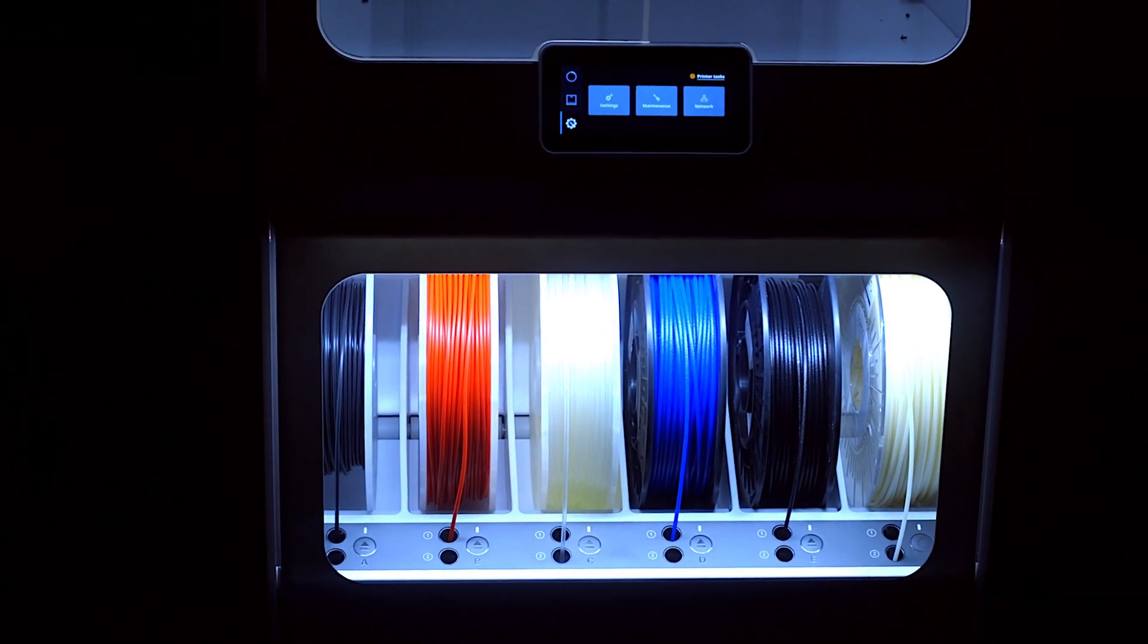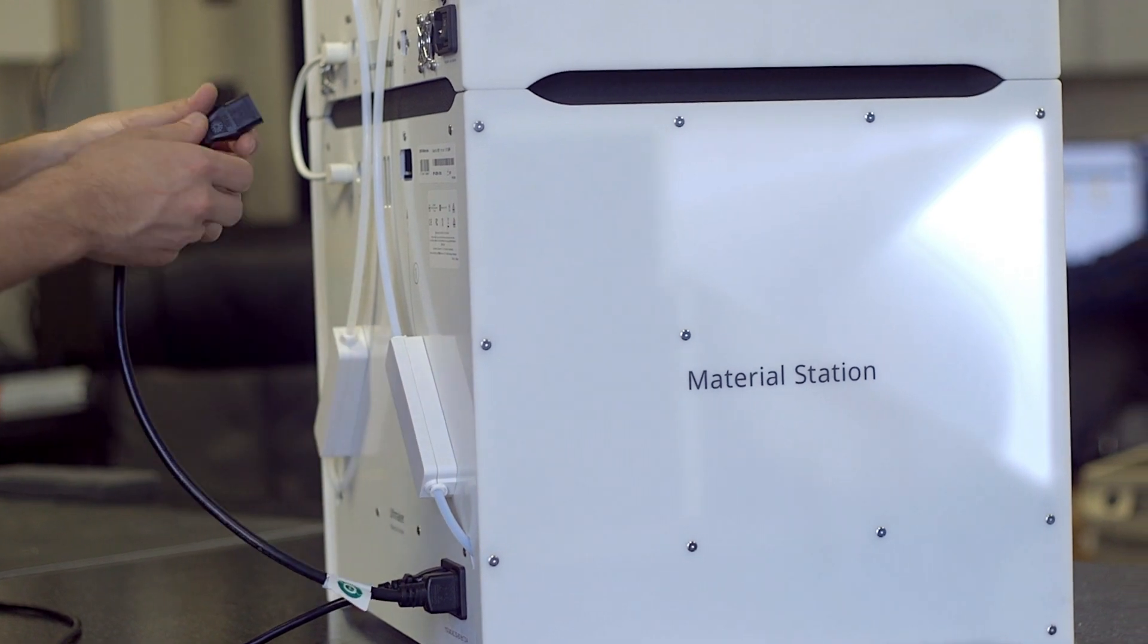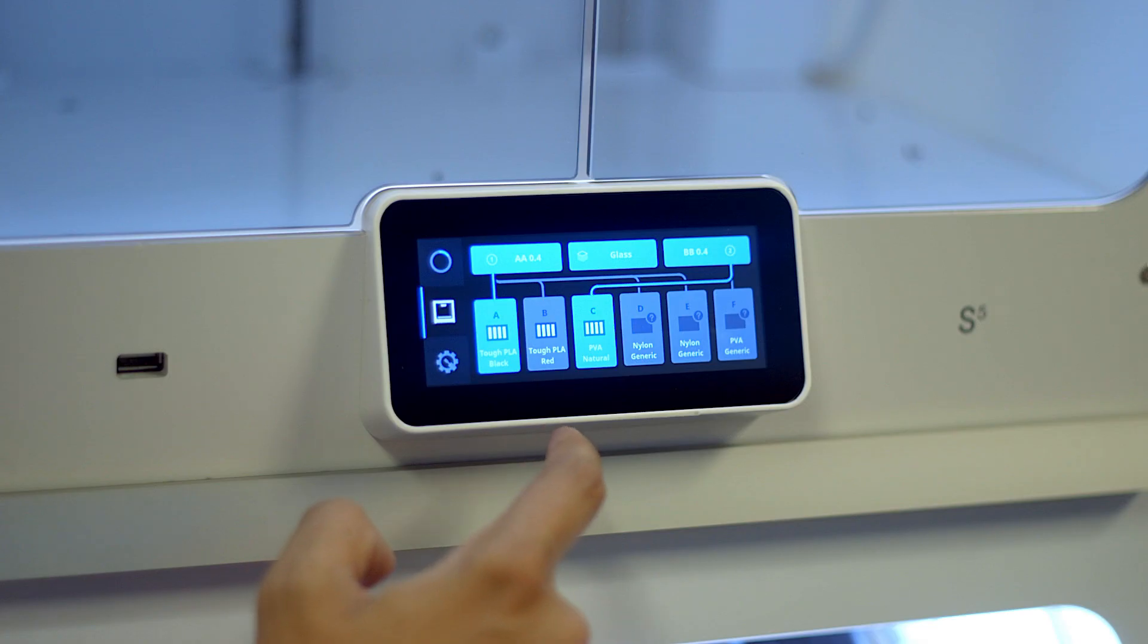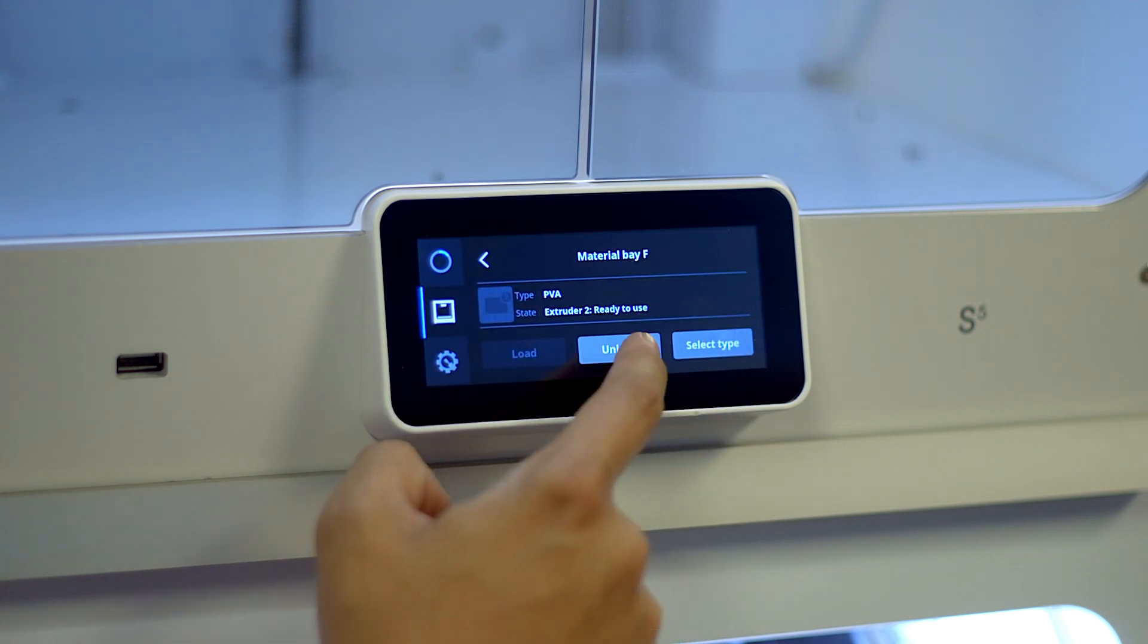The Ultimaker S5 material station was developed based on customer research which found material handling needed to be taken to the next level. The material station has many features under the hood that simplifies the 3D printing workflow while delivering a more efficient and reliable solution for material handling.